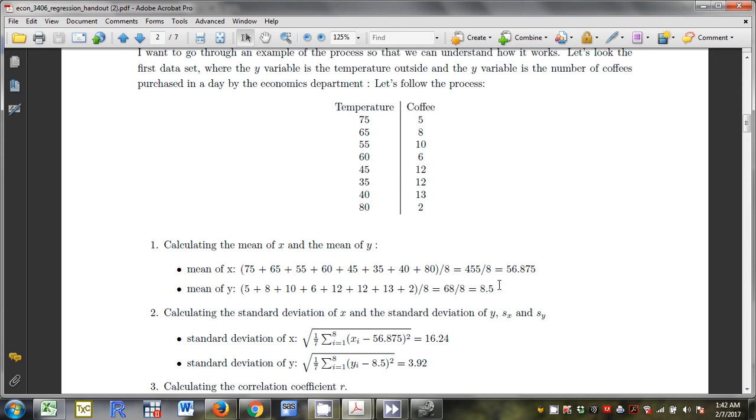Standard deviations. Go through this process. Take each value for x, subtract the mean, you square it, you add them up, divide by seven, take the square root. 16.24. That's going to go in the bottom of my slope formula. 3.92 is going to go in the top.